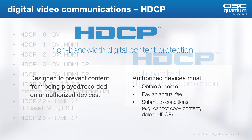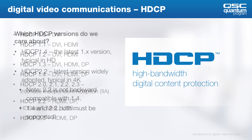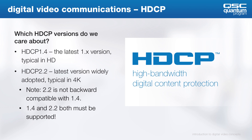Here's a brief timeline of HDCP. As you can see, more interfaces began to adopt the protocol as time goes by. You might be asking why you care about these versions. Well, for starters, version 2.2 is not backwards compatible with version 1.4. HDCP 1.4 is typical for HD content, and HDCP 2.2 is typical for 4K content. Since they are not backwards compatible between 2.2 and 1.4, manufacturers need to build devices that support both 1.4 and 2.2.